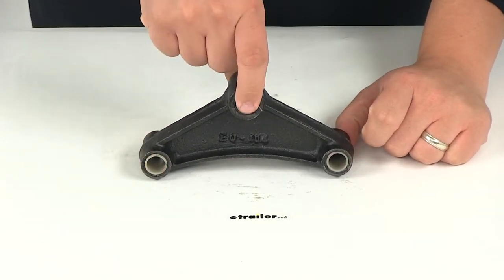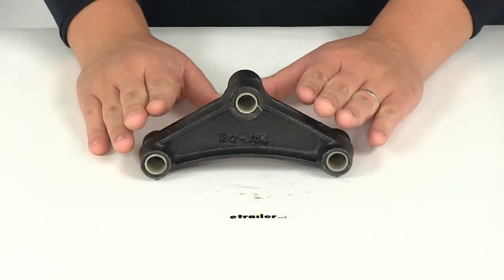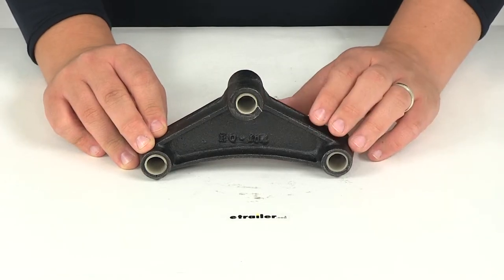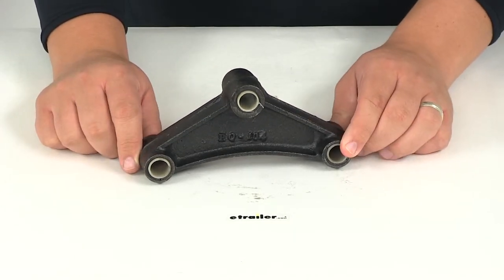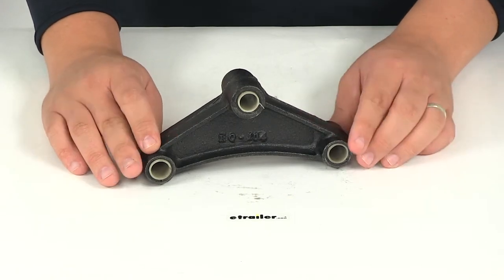The equalizer is suspended from the center hanger, also sold separately. This system transfers load and sudden impacts from one axle to another by permitting movement between the axles. It distributes weight evenly and results in a smooth ride for the trailer.